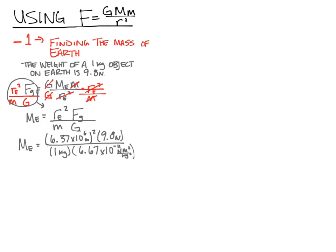When you put these things into your calculator, use the EE button for scientific notation and be careful with your parentheses. Some units cross out, and we're left with kilograms. Once we plug everything in, we find the mass of the Earth to be 5.96 × 10²⁴ kilograms — which we simplify to 6 × 10²⁴ kilograms. This is how we use Newton's universal gravitation to find Earth's mass.